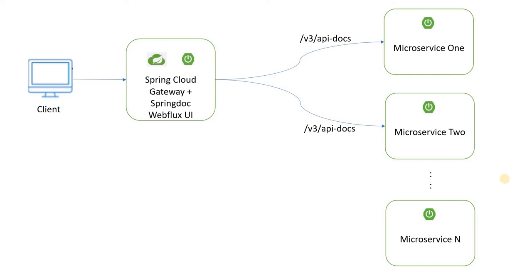Hi everyone. In this video I'm going to show you how to create a common Swagger UI using Spring Doc API, which is based on OpenAPI 3 specifications. As you see on the right hand side, we have multiple microservices running. Each one of these microservices need not carry the baggage of UI only to expose the Swagger UI. Instead, we can have a centralized UI which can expose the Swagger UI by aggregating all the API definitions of each of these microservices. If we can expose /v3/api-docs on each of the microservices, the centralized UI can leverage and aggregate all of them and show it at one common place.